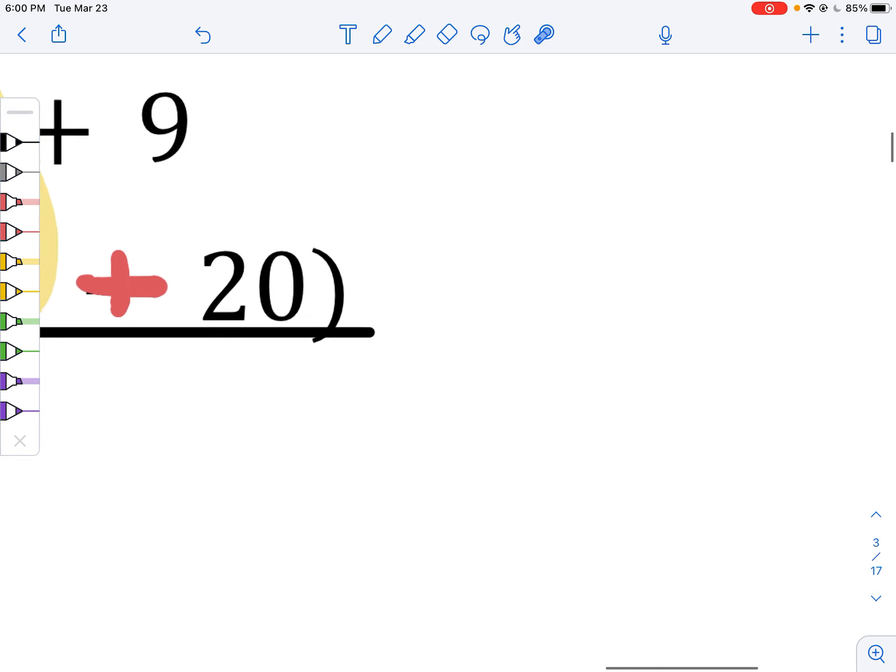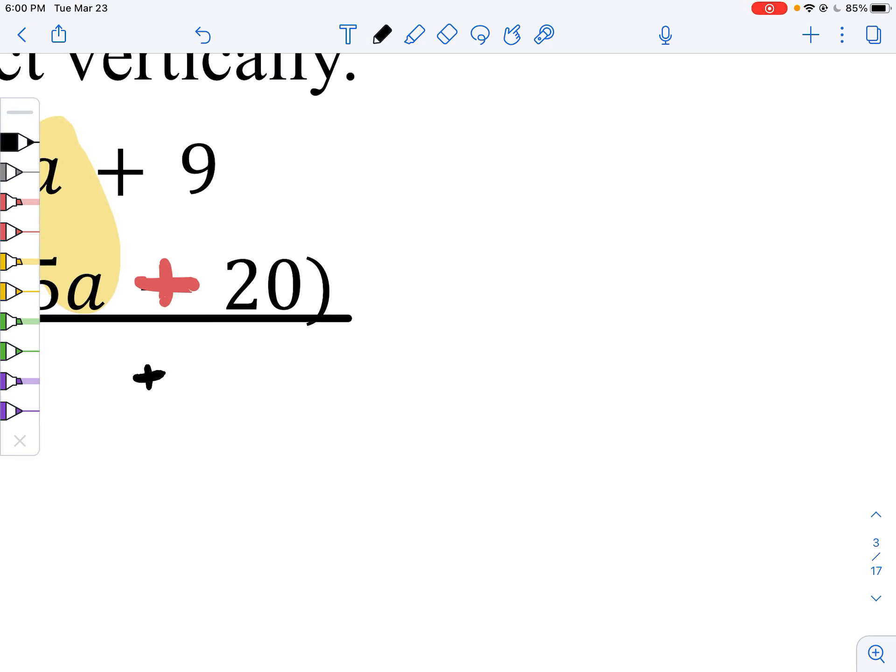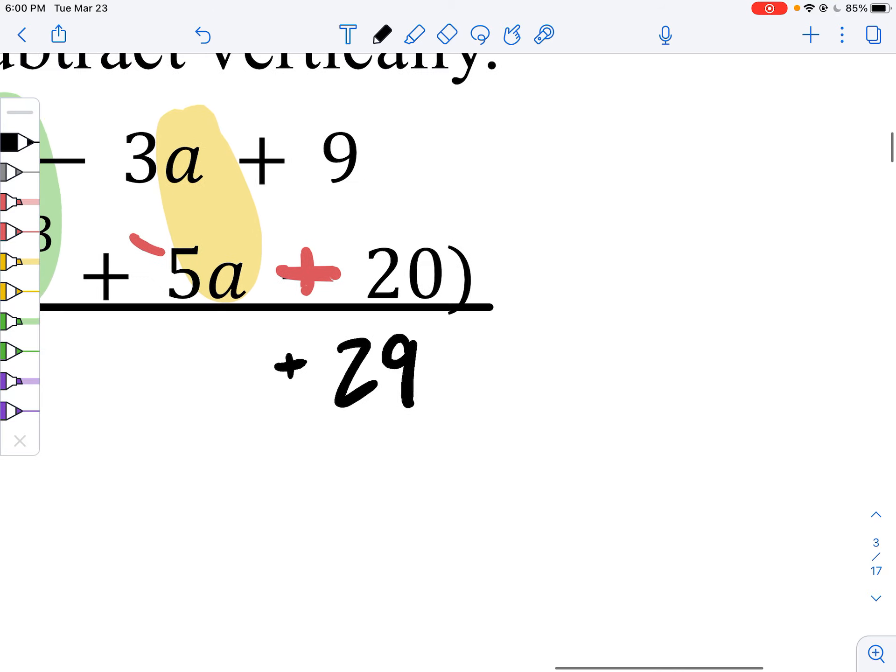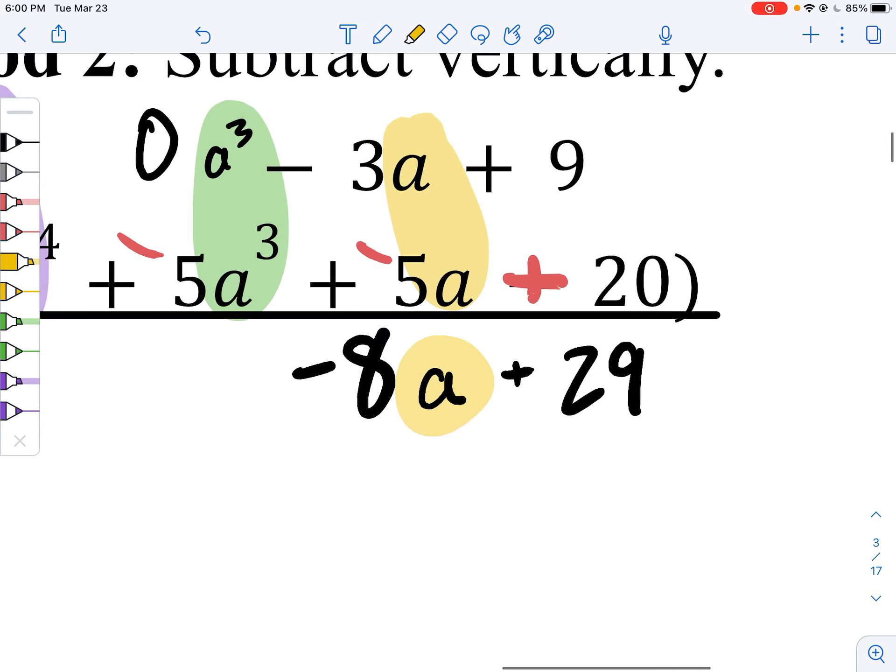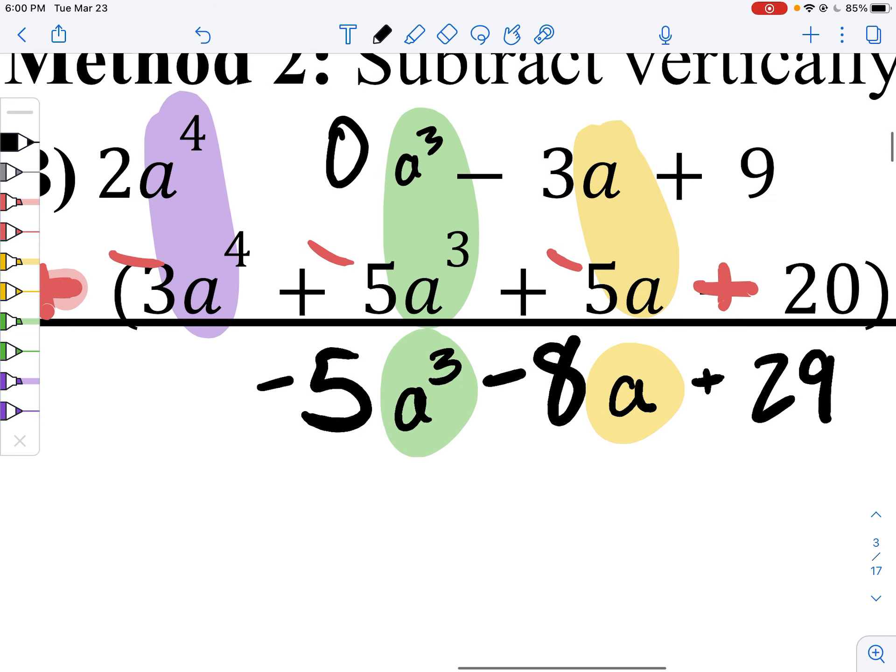So we go all the way over here, 9 plus 20, 29, negative 3 plus negative 5, negative 8a. 0 minus 5, negative 5 a cubed. And finally, 2 minus 3, negative 1 a to the fourth power.